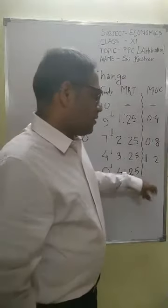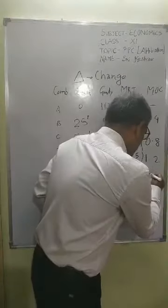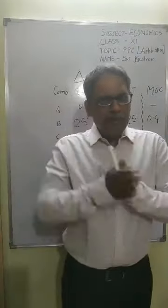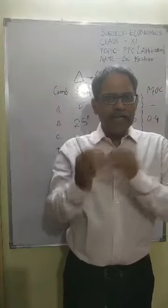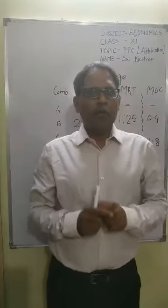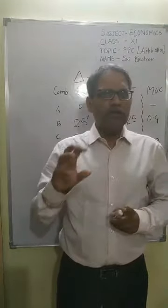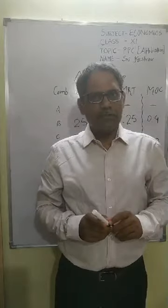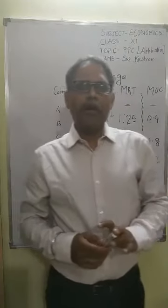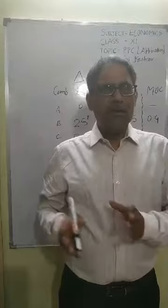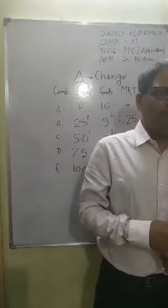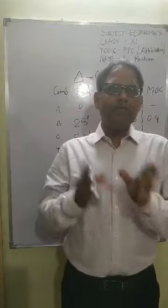By this table, you understand the difference between MRT and MOC. MRT is the ratio of sacrifice to gain, and when you solve it mathematically, the resulting value is called MOC — Marginal Opportunity Cost. I will now start the next topic: Properties of PPC. Today's main focus will be on two topics: Properties of PPC, and application-based questions on PPC.